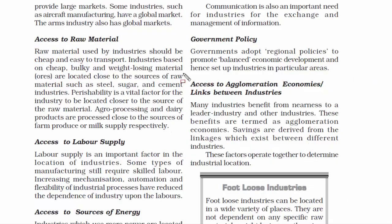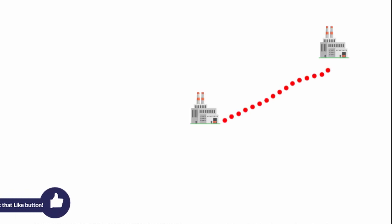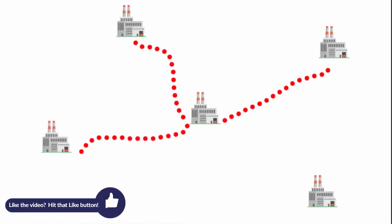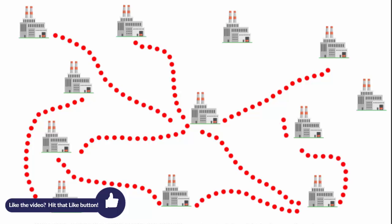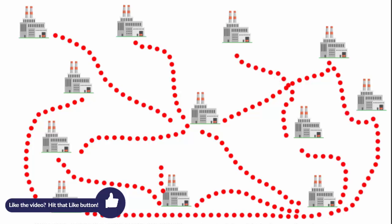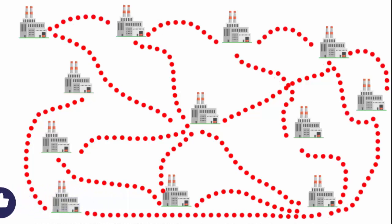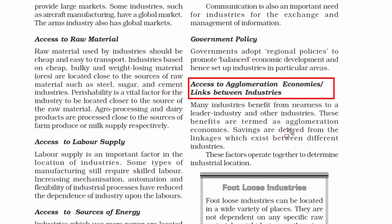The final factor is access to agglomeration economies, that is links between industries. Agglomeration means a collection of things, so agglomeration economies means a collection of economies. If industries are located nearby to each other, they tend to mutually benefit from each other in terms of services, adaptation of technology, methods, ideas, etc. So these were the factors influencing the industrial locations.